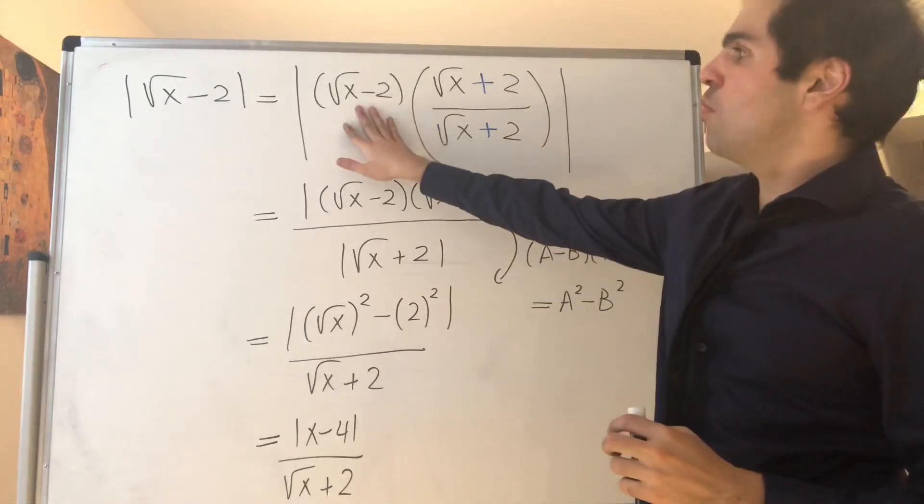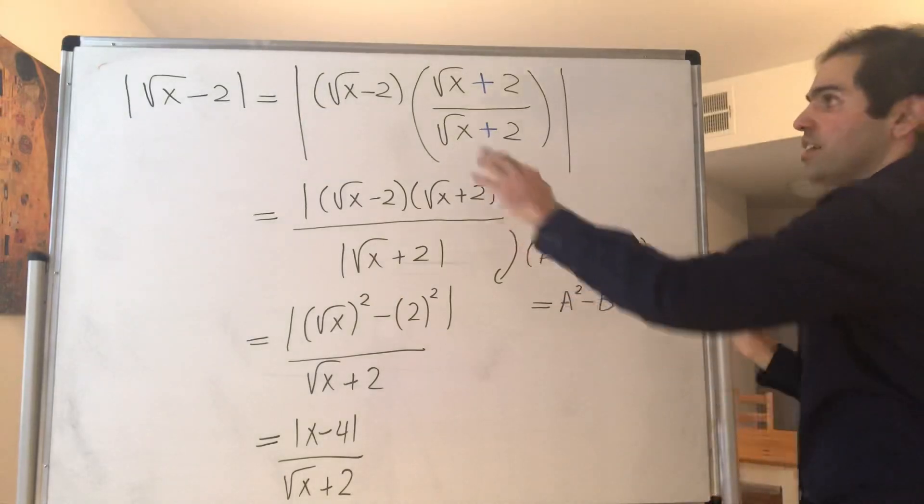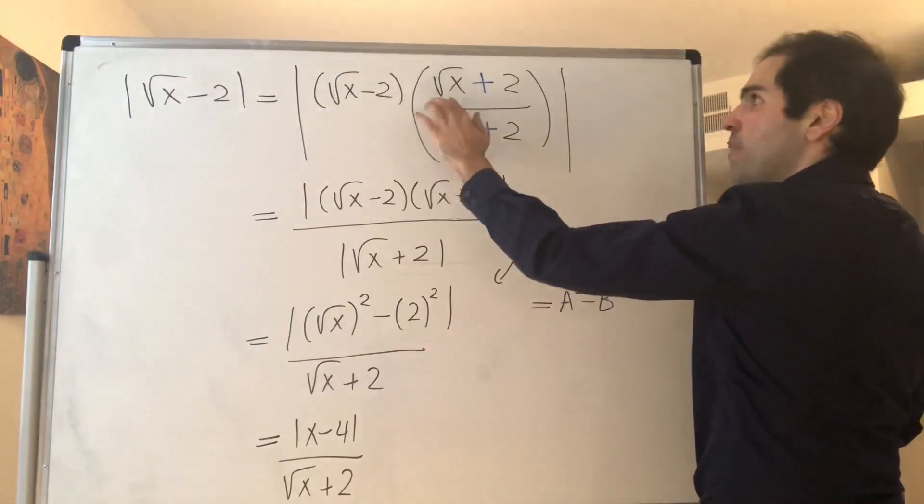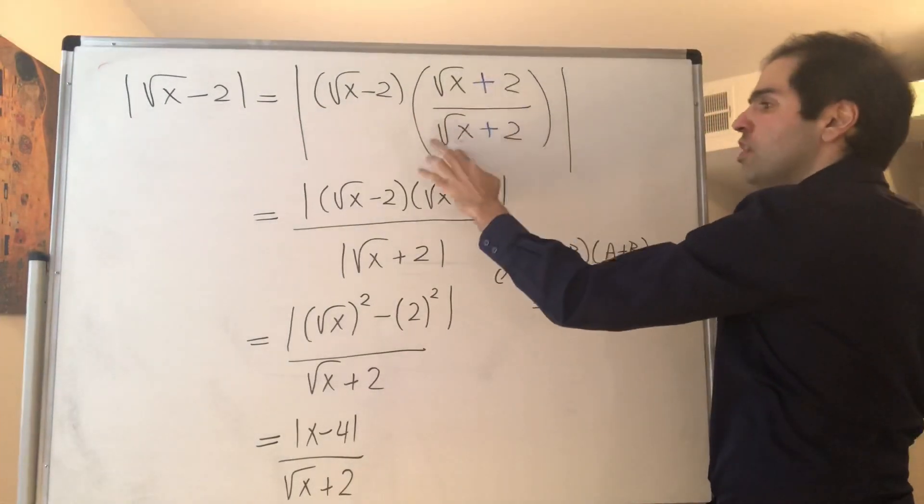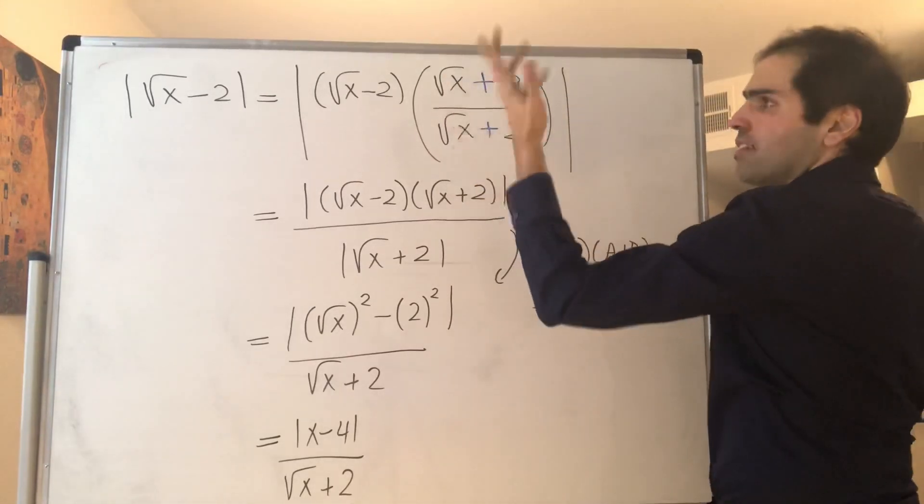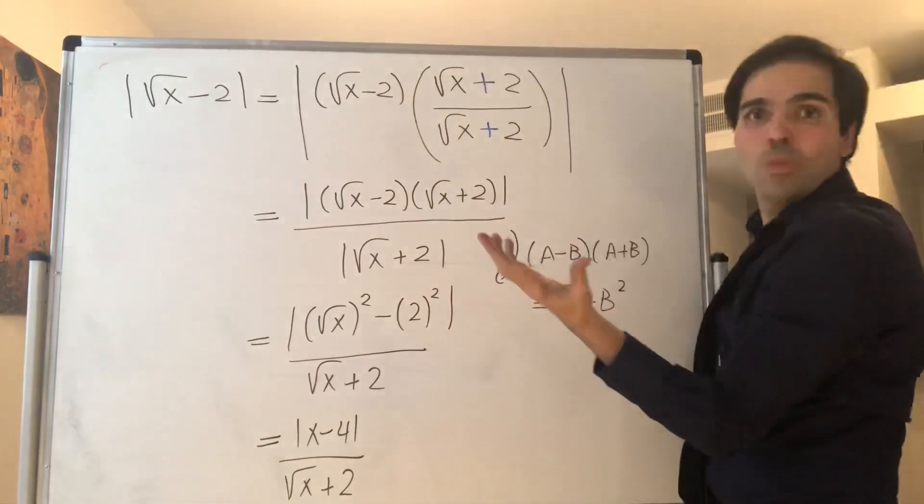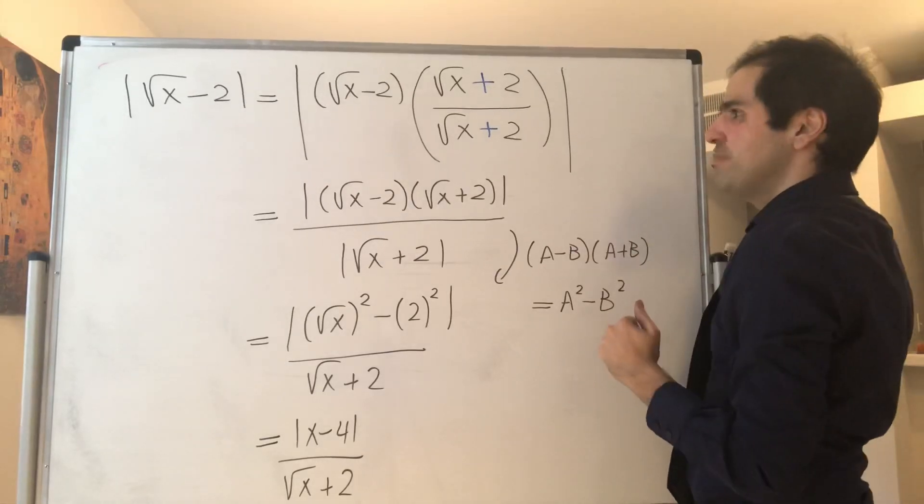So let's multiply this by square root of x plus 2 and square root of x plus 2. And that's not a problem because this is just 1. So you're just multiplying this by 1.